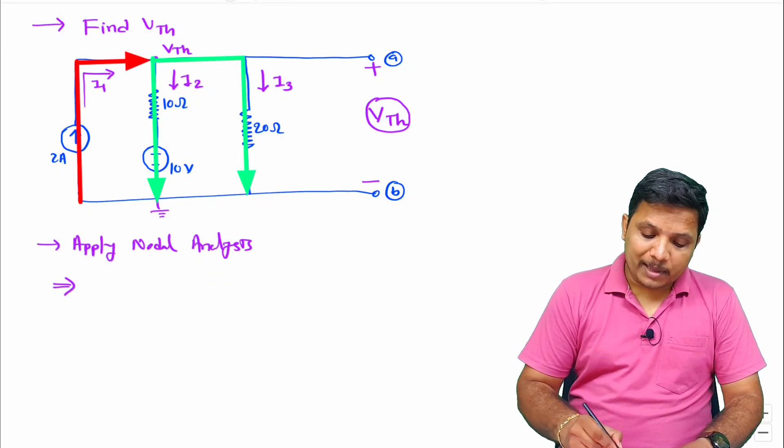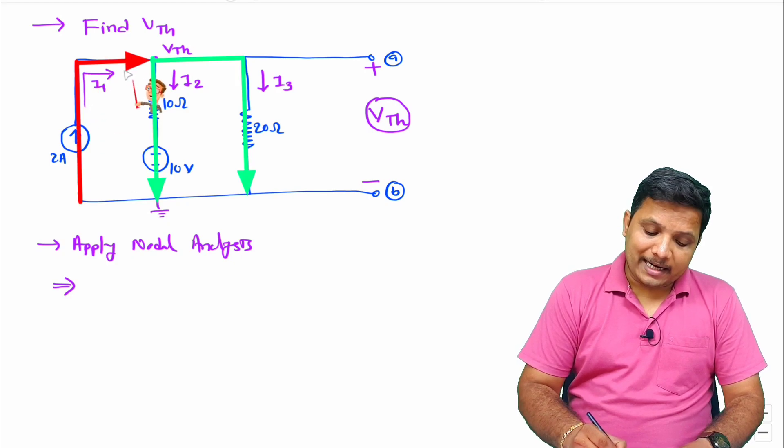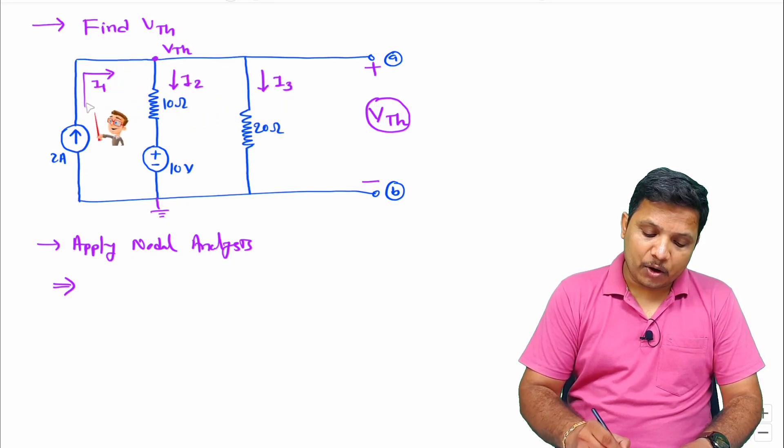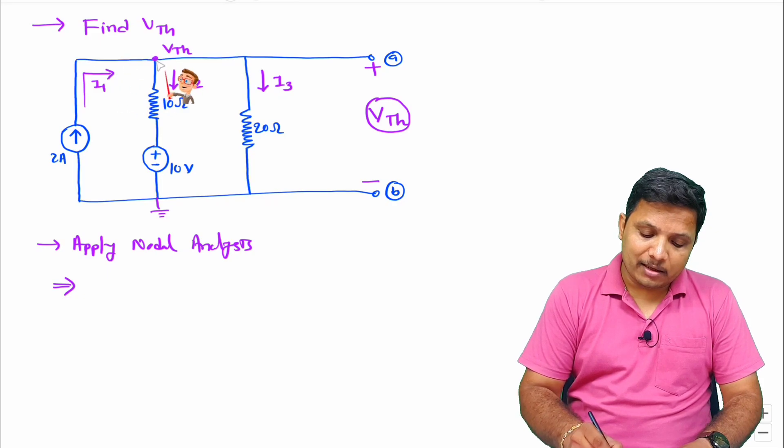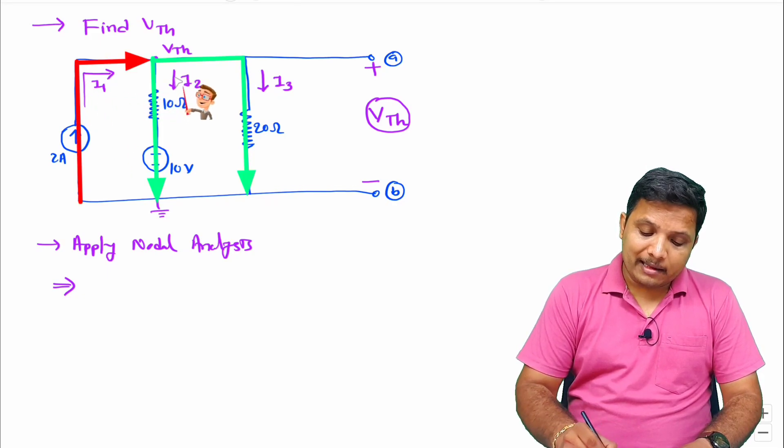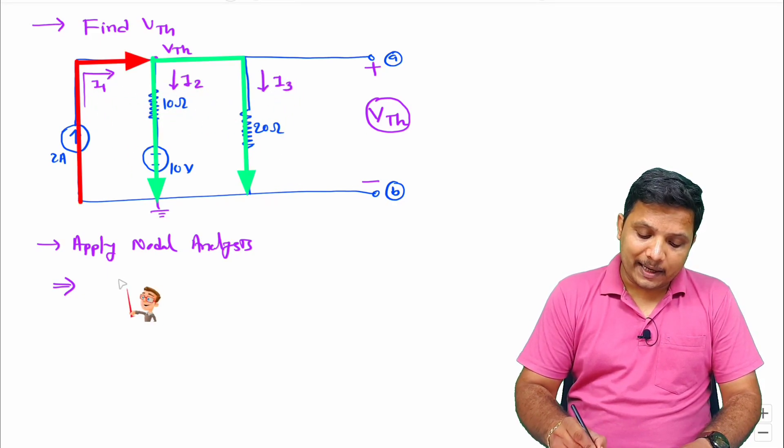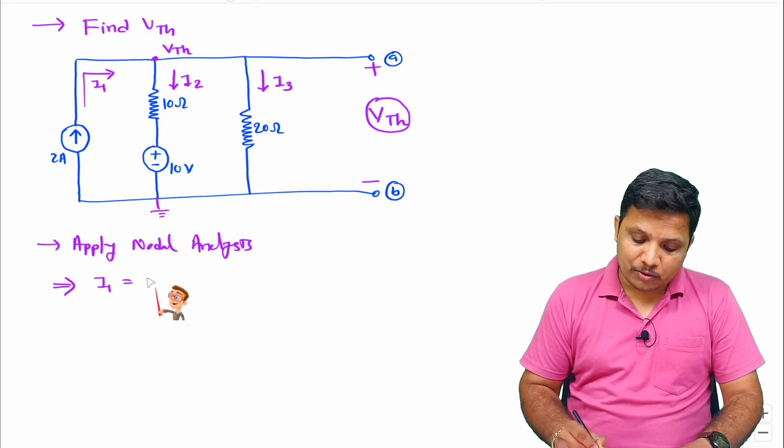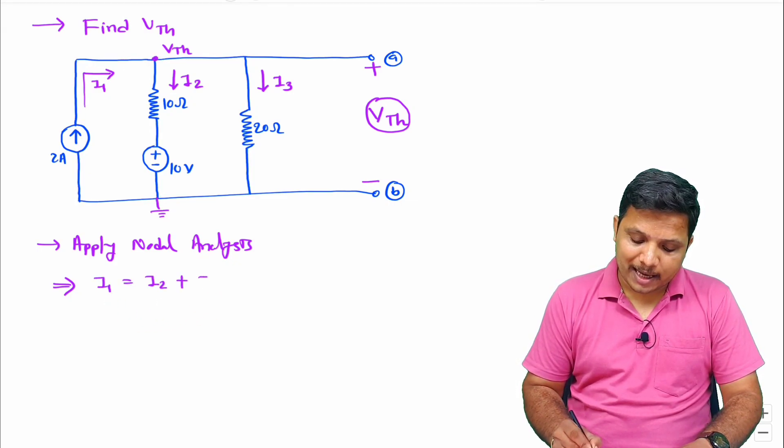Let us apply nodal analysis at node VTH. If you apply nodal analysis, then entering current equals leaving current. If you observe, entering current is I1 to this node and leaving current is I2 and I3. So I can say I1 equals I2 plus I3.